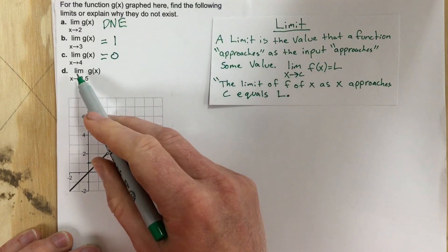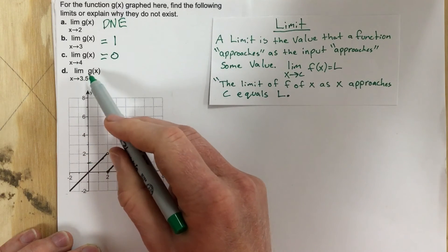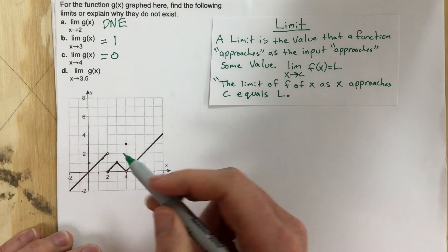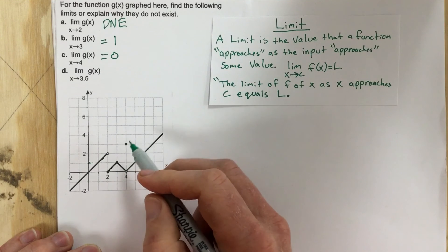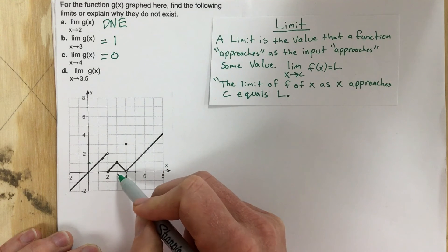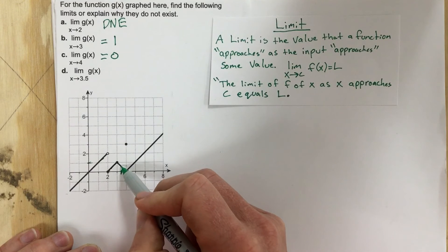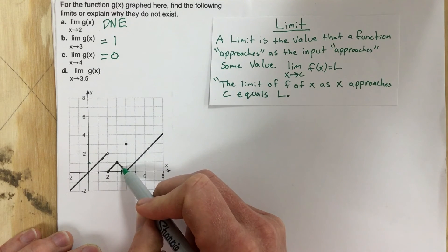And then finally, limit of this function as x approaches 3.5. So as we're approaching 3.5, 3.5 is right here. So this function as it approaches 3.5, to me it looks like it's kind of right in the middle. So that's a y value of 0.5.